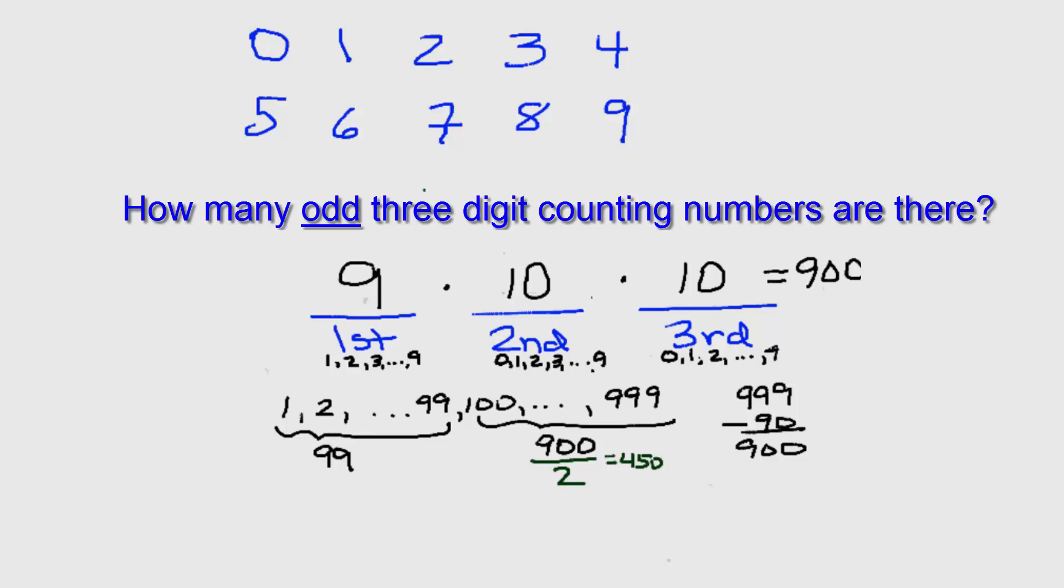Let's see if we can come to the same conclusion using the fundamental counting principle. So which options do we have for our first digit? Well, we still can't use 0, so we're still going to have the digits 1 through 9 to choose from. 9 possibilities.